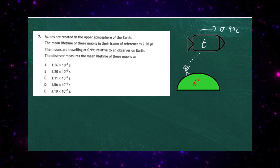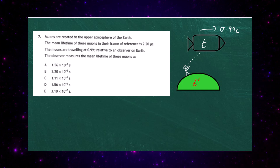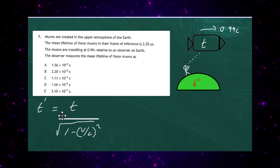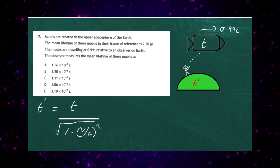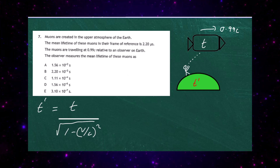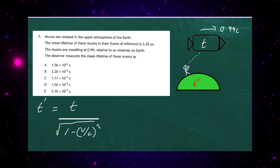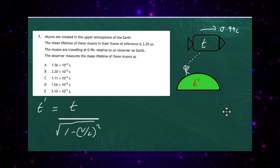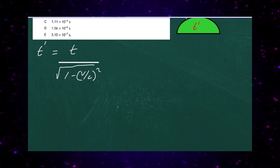You'll measure T', and T' is given by the time dilation expression: T' equals T — the proper time measured by an observer in the muon's frame of reference — divided by the square root of 1 minus V squared upon C squared. So if we do that calculation, we end up with the following.